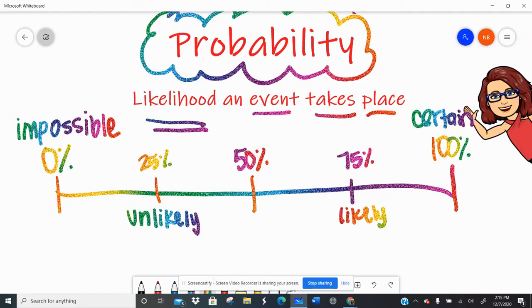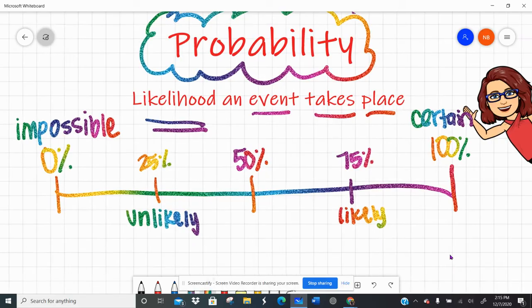We can also talk about probability in terms of fractions, and I'll show you how here in a minute. Because remember, fractions, decimals, percents, equivalent relationships. So the probability is the likelihood that something will happen or that an event takes place.